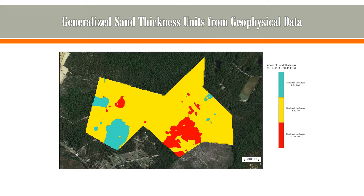We generalized this even further based on the core sampling and came up with three zones of sand thickness: the yellow being the average 15 to 30 feet thick zone of sand across the site; the red zones being areas where potentially more sand could be mined down to depths of about 45 feet; and the blue areas representing zones where the sand unit was thinner, 2 to 15 feet thick.